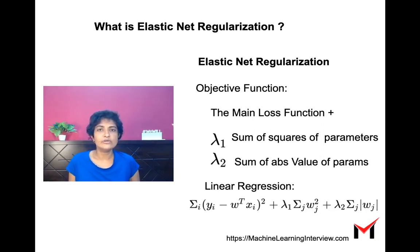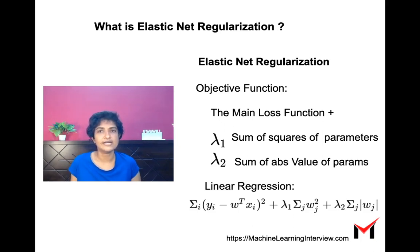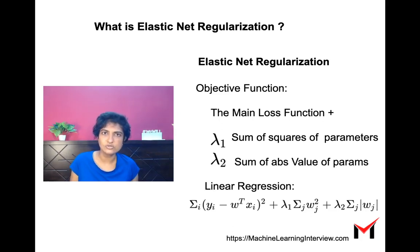So why do we use elastic net? If some parameters are not important, it makes sense to use lasso to get rid of those parameters that are least important in determining the target variable. Ridge regression, on the other hand, does not lead to sparsity but just shrinks the parameters. If there are high correlations between the parameters, it makes sense to use ridge regression rather than lasso, since we do not want to eliminate some of those parameters.